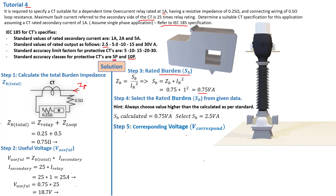Step number five: the corresponding voltage. The corresponding voltage is the voltage corresponding to the CT rated VA, given by SB divided by the secondary current I_N: 2.5 divided by 1 amp, giving us 2.5 volts.